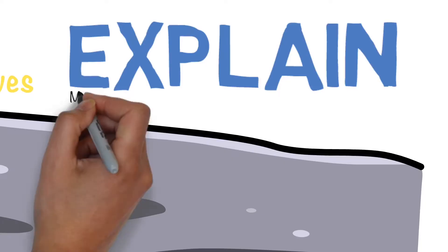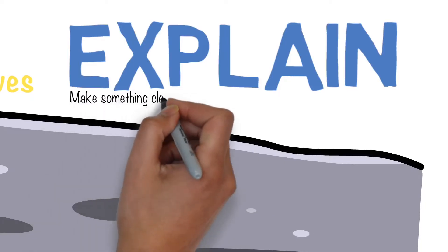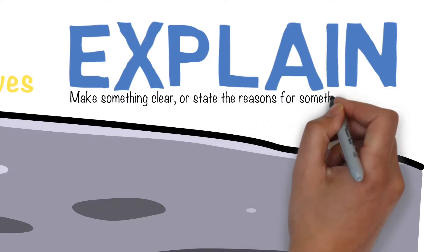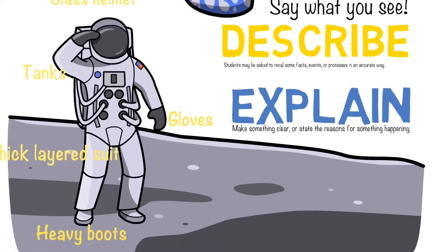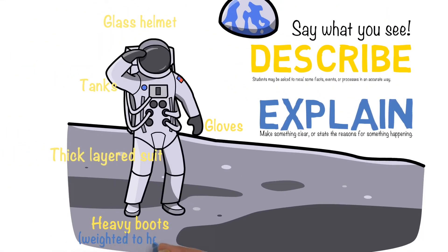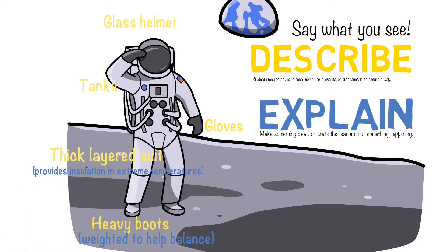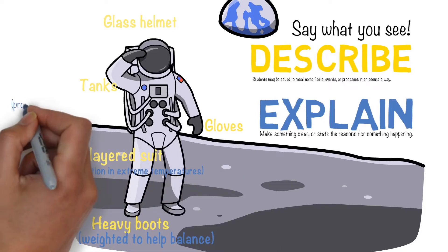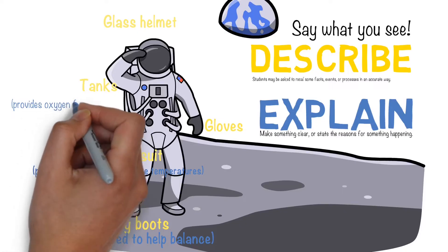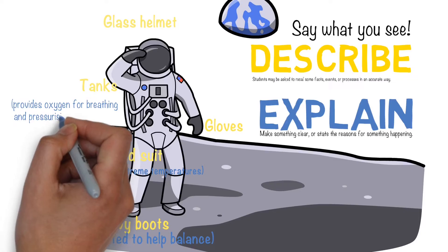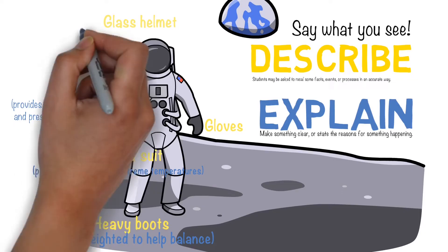If we're asked to explain, what we'd be doing is making something clear or stating the reasons for something happening. In other words we'd be saying the heavy boots, we'd be explaining we'd say they weight the astronaut for balance. The thick layered suit provides insulation in extreme temperatures. The tanks provide oxygen for breathing and also pressurize the suit. In other words we're explaining why the person would be wearing those particular items.